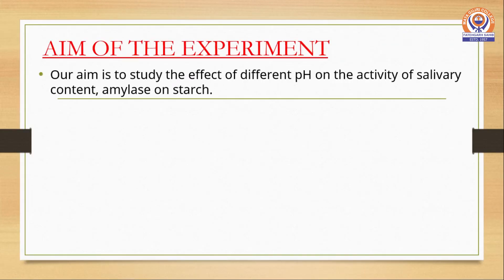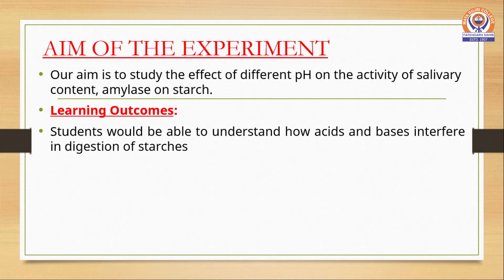The aim of this experiment is to study the effect of different pH on the activity of salivary amylase on starch. The learning outcome would be that students would be able to understand how acids and bases interfere in the digestion of starches — basically, how the change in pH affects the activity of the proteinaceous enzyme salivary amylase and how it interferes in the breakdown of starch into maltose.